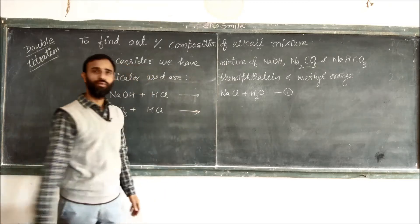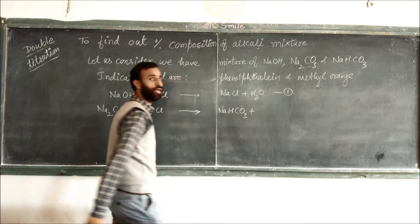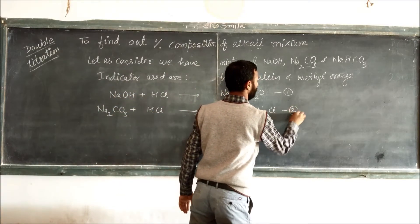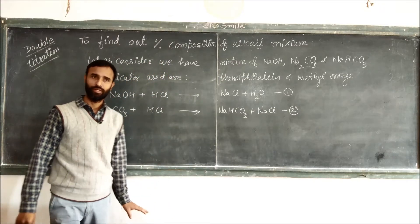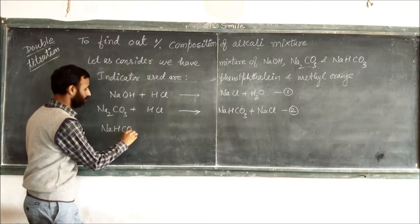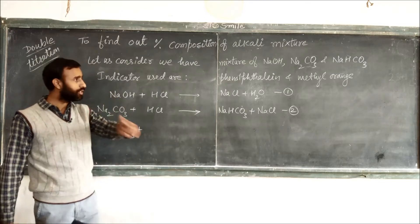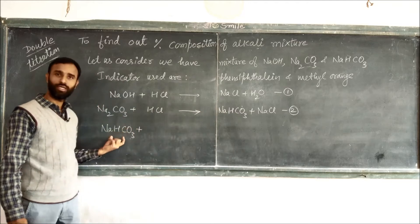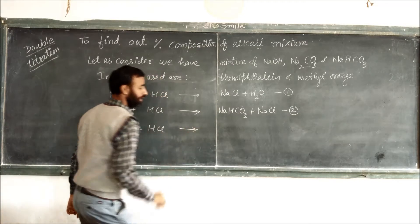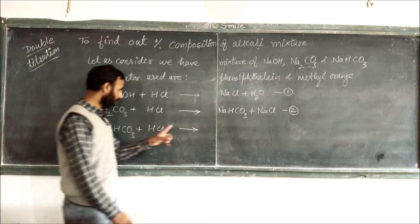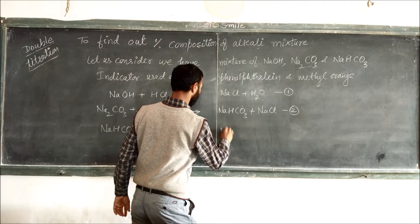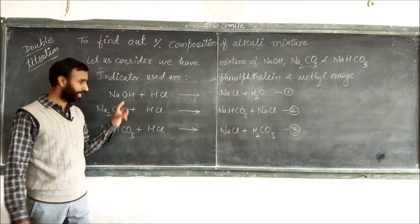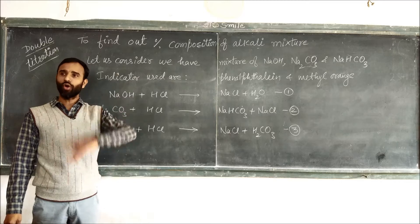In the second step, once NaOH is completely neutralized, the added HCl reacts with sodium carbonate to give sodium hydrogen carbonate. Then in the third step, the sodium hydrogen carbonate — both previously present in the mixture and newly formed — reacts with HCl, ultimately giving NaCl and H₂CO₃. These are the three reactions taking place as HCl is added.